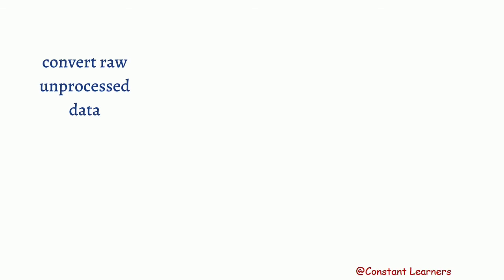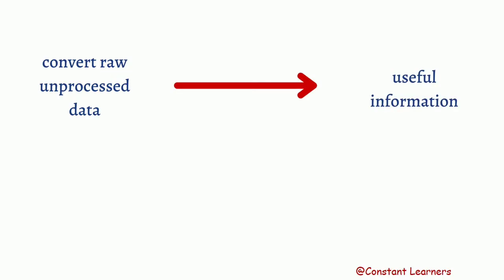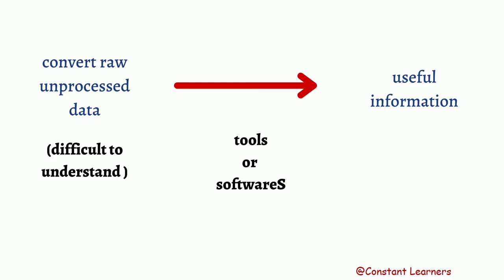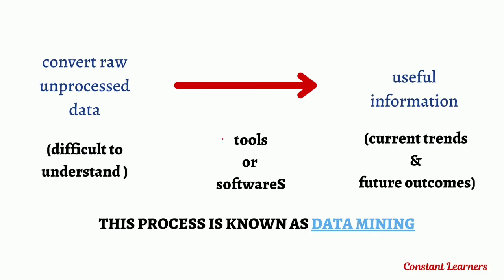The data taken from multiple sources is raw, unprocessed data. We need to convert this raw unprocessed data into useful information, because this data is difficult to understand. We need to use some software or tools to understand this data and convert it into useful information so that it can be used by businesses to identify current trends and future outcomes. This is nothing but data mining — converting raw unprocessed data using tools or software into useful information to understand trends and outcomes.